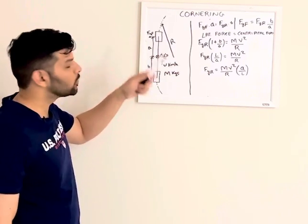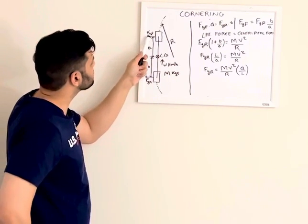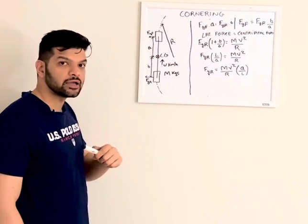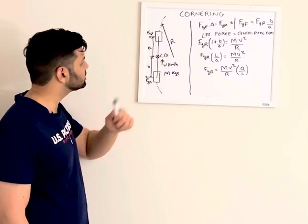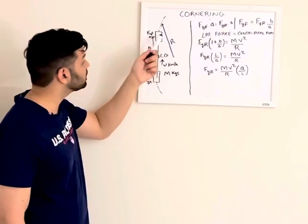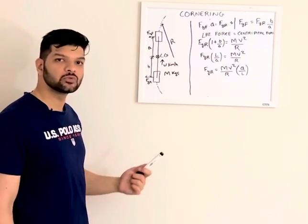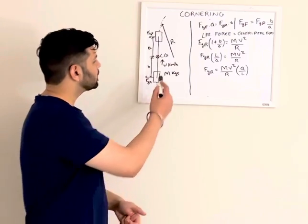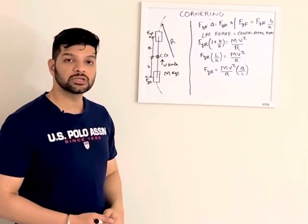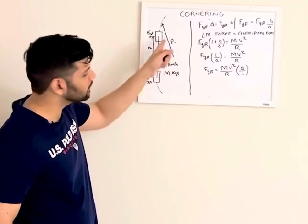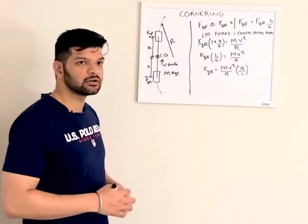So the lateral force generated at the front tire is FYF. Lateral force generated at the rear tire is FYR. The center of gravity is distributed: distribution of center of gravity from the center point of the front wheel is A and from rear wheel is B. It's going at a speed of V kilometers per hour. It has a mass of M kgs and it's going through this turn with a radius of R.